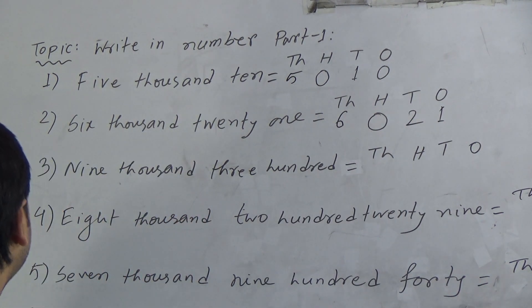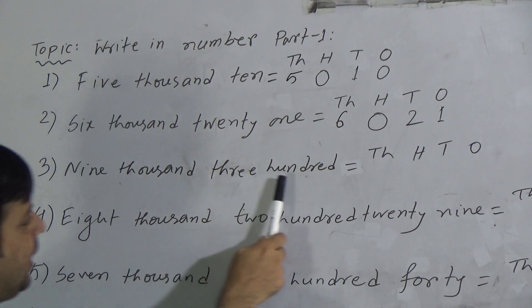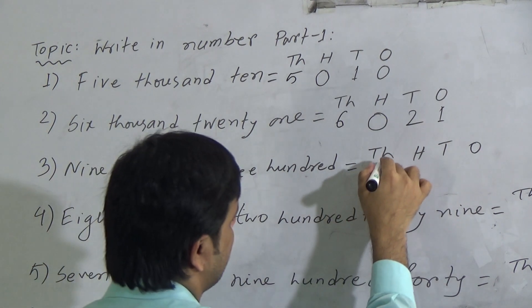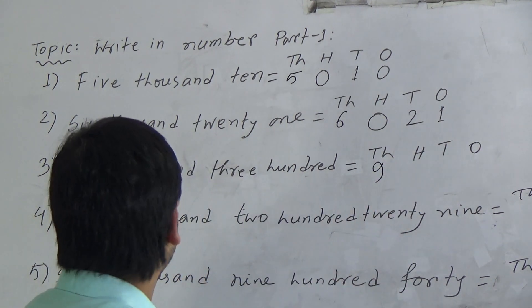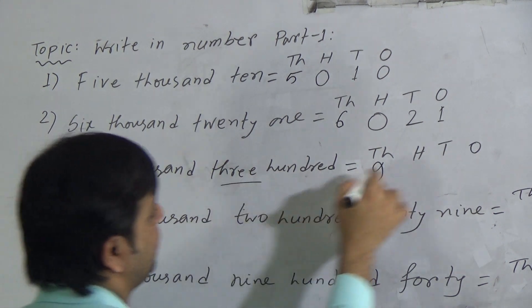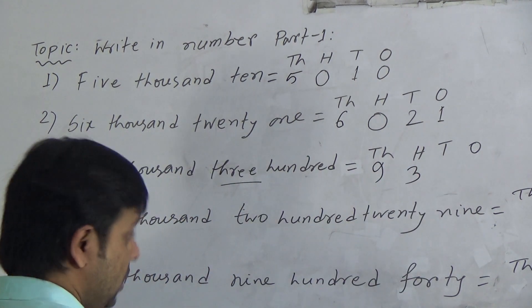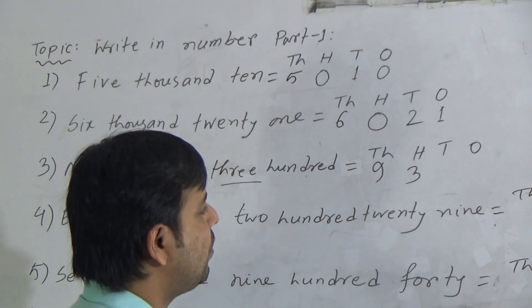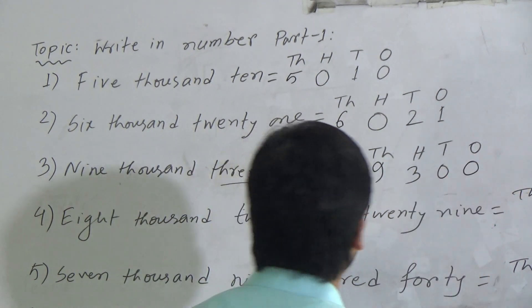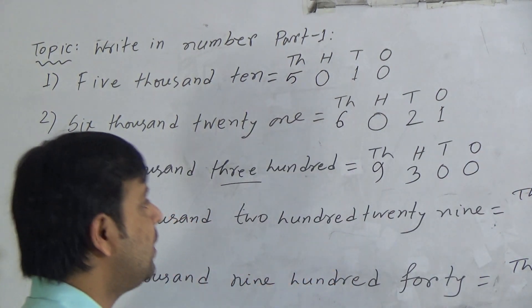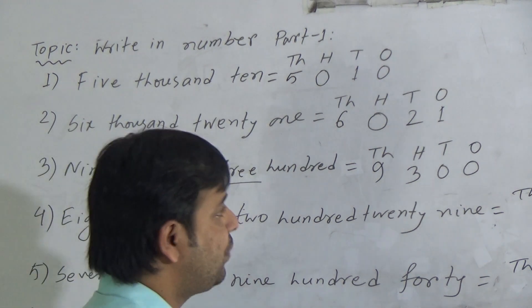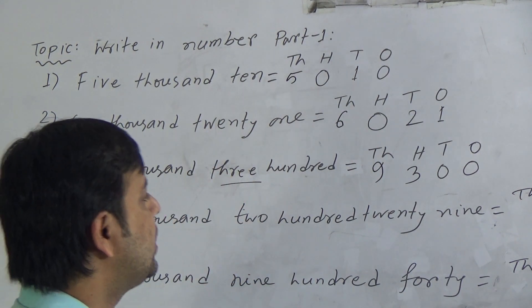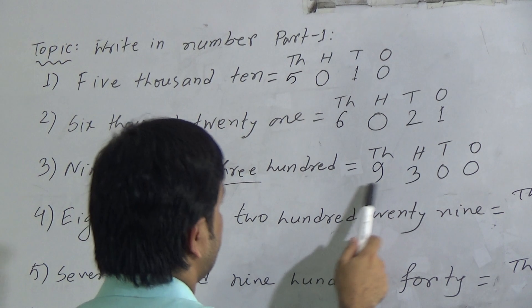Question 3: nine thousand three hundred — 9300. We write 9 in the thousands position. As here is 300, we write 3 in the hundreds position. There is no digit in tens and ones place, so we fill up both by 0. This is 9300.